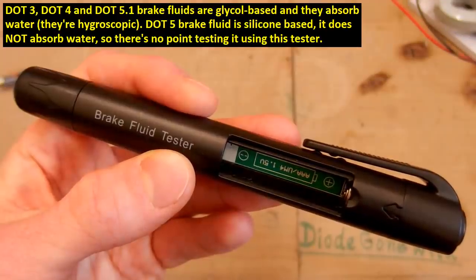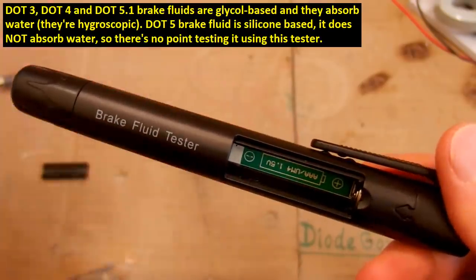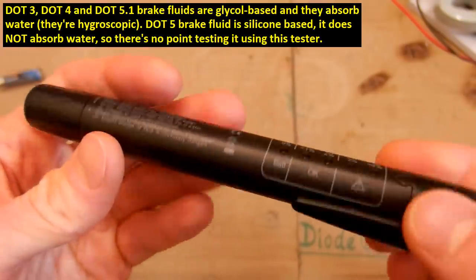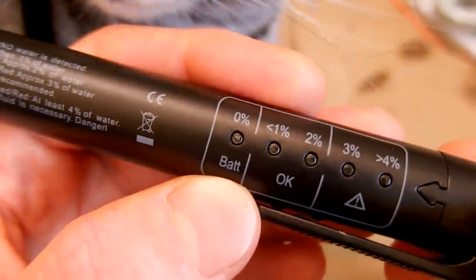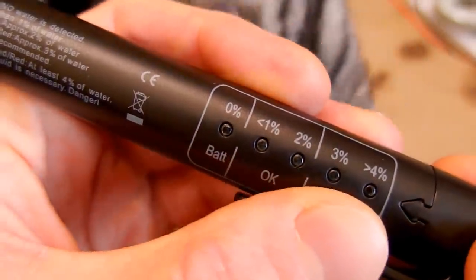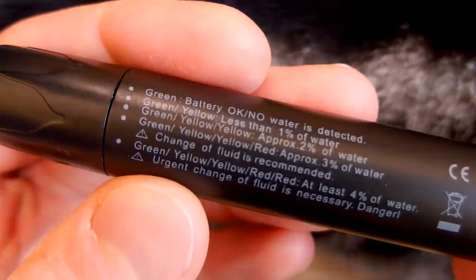And of course once every couple years you should replace the brake fluid in your car, but you can also test it using this tester to see how much water is absorbed in it. And here is a rough indicator of how many percent of water your brake fluid contains. And here is some description.